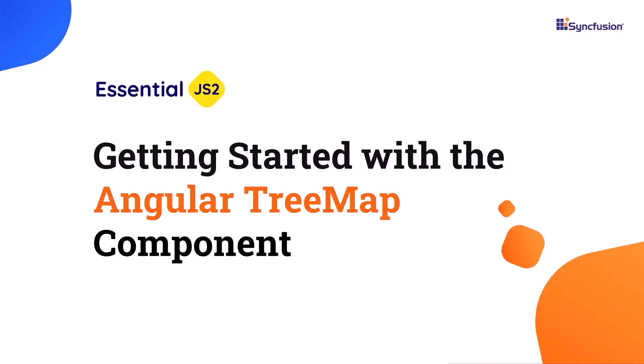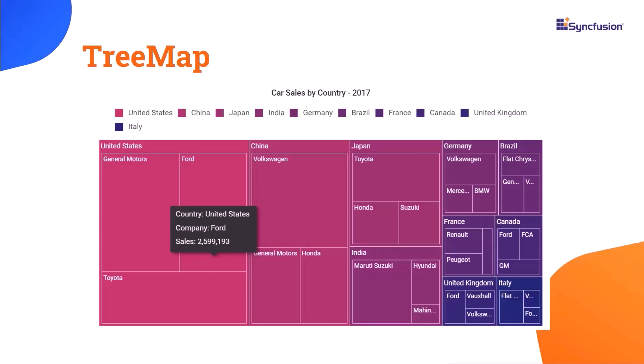Welcome to this Angular Tree Map component tutorial. With this Syncfusion Angular Tree Map component, you can visualize both hierarchical and flat data. You can customize the look and feel of the tree map by using built-in features like color mapping, legends, and label templates.